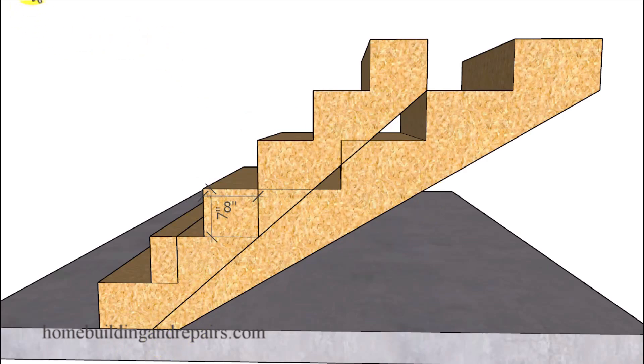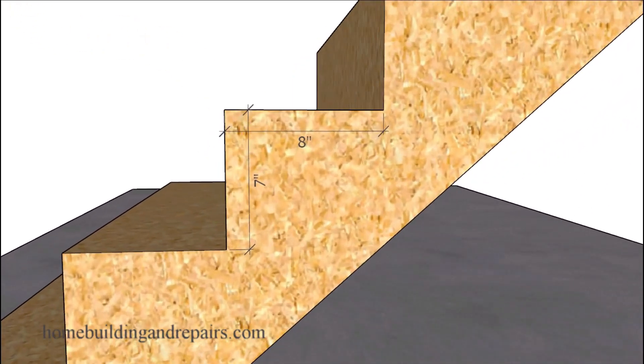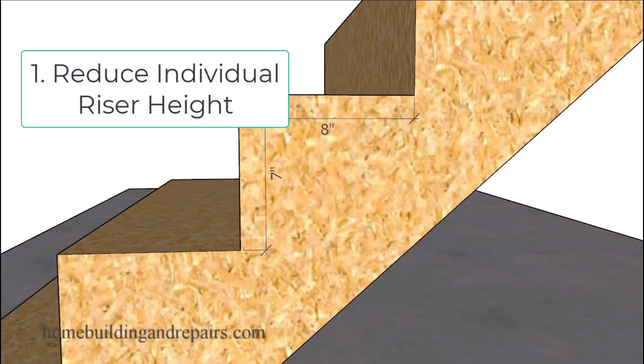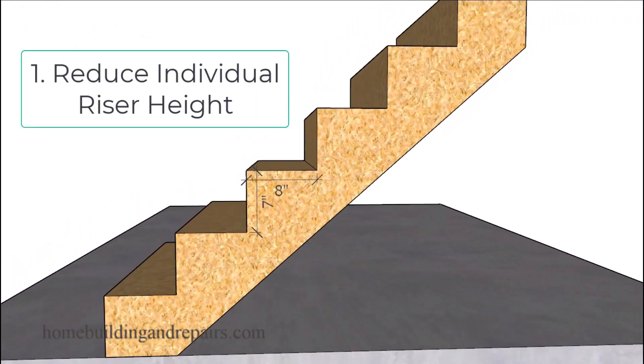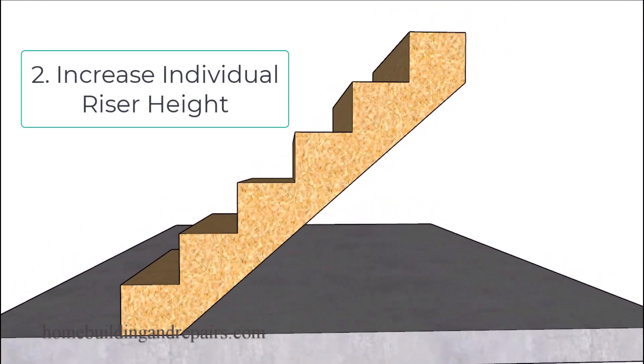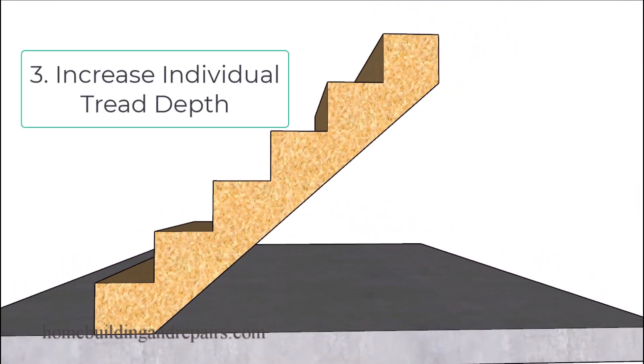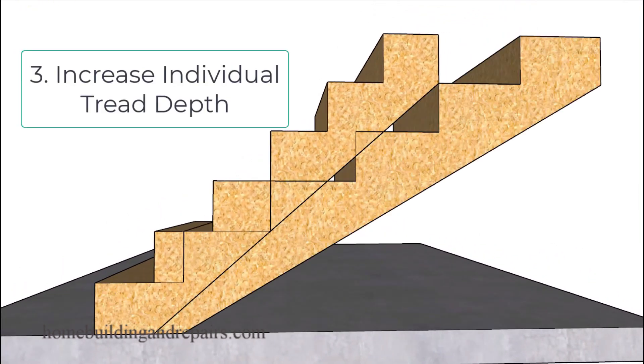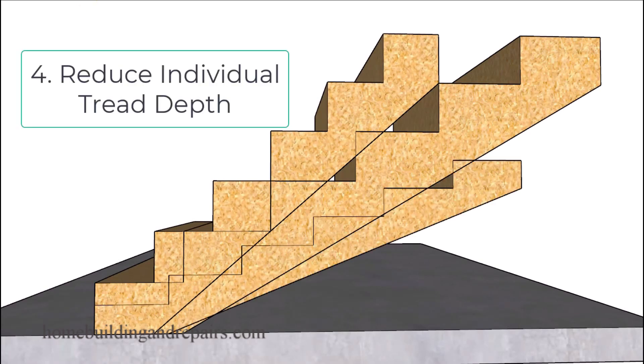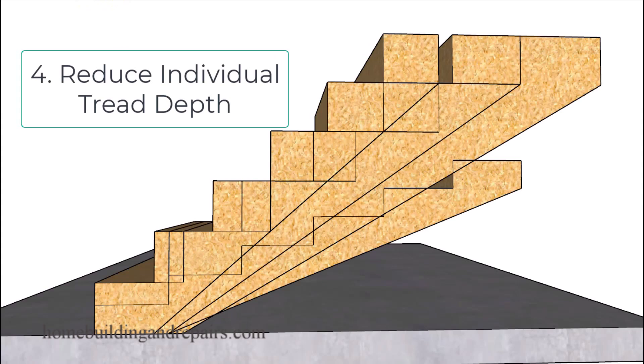So in reality we have four ways to change the angle of a stairway. The first will be to reduce the riser height. The second will be to increase the riser height. The third will be to increase the depth of the stair tread. And the fourth will be to reduce the depth of the stair tread to change the angle of the stairway.